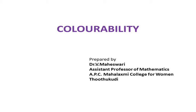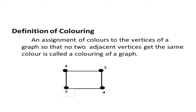Now we are going to see about the colorability concept. First we look into the definition of coloring. Coloring is just an assignment of colors to the vertices of a graph so that no two adjacent vertices get the same color.